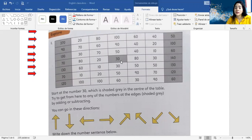Try to get from here to any of the numbers at the edges shaded gray. What are the numbers at the edges? These and these. These numbers are at the edges. So by adding or subtracting.